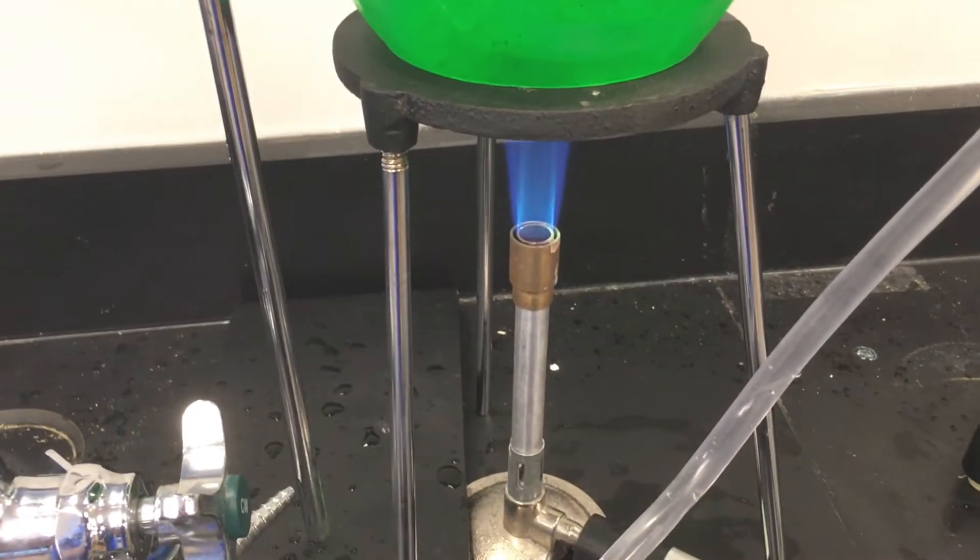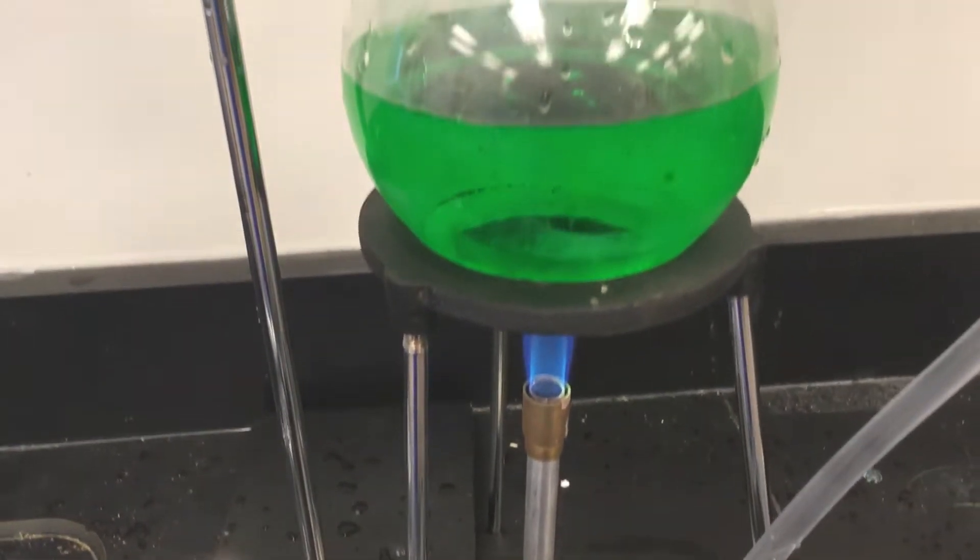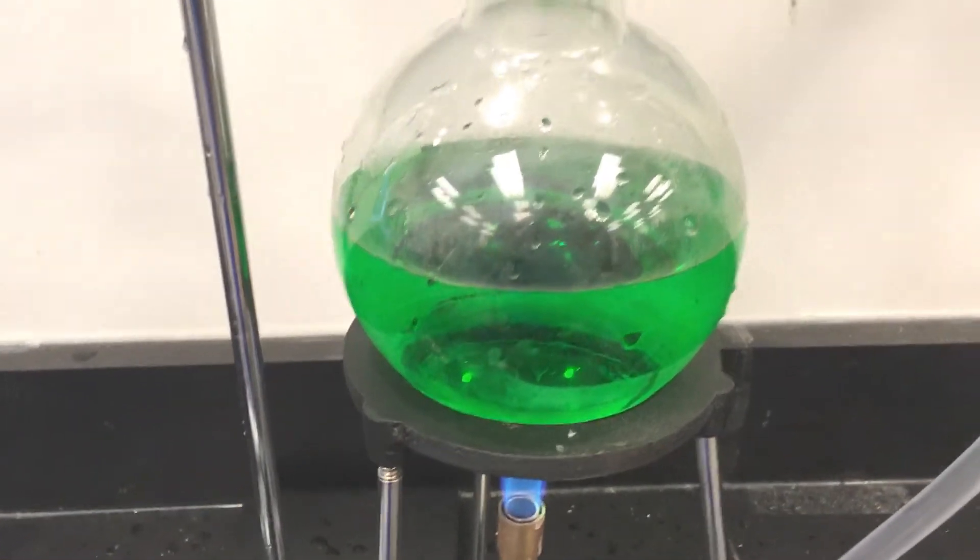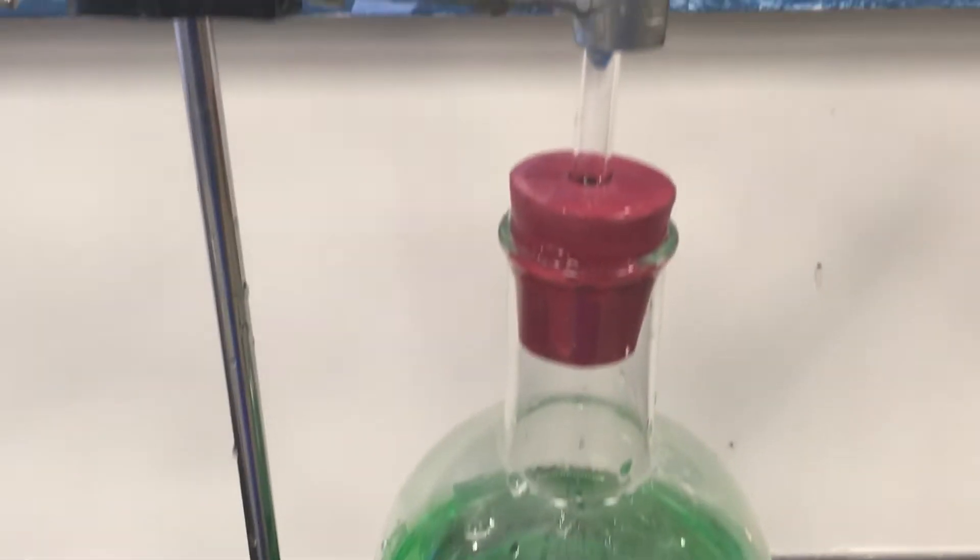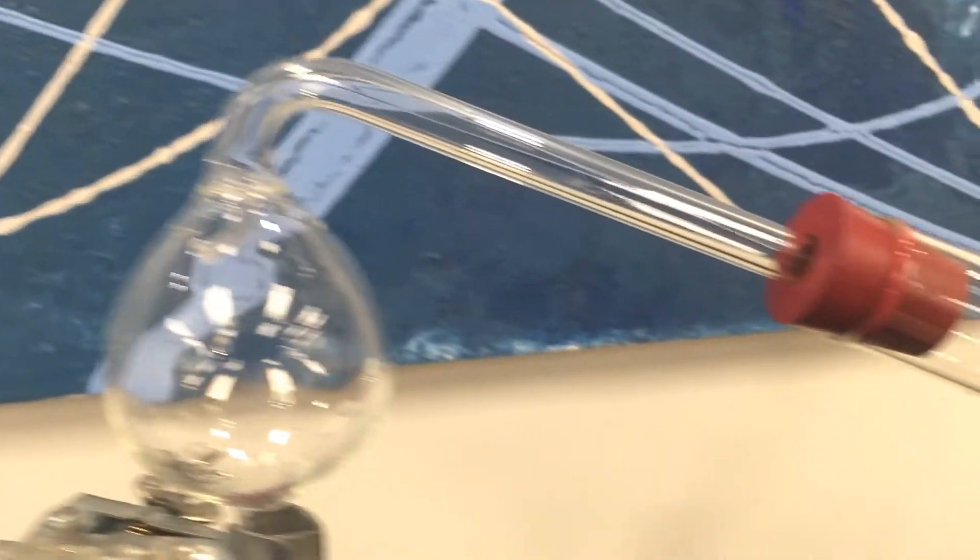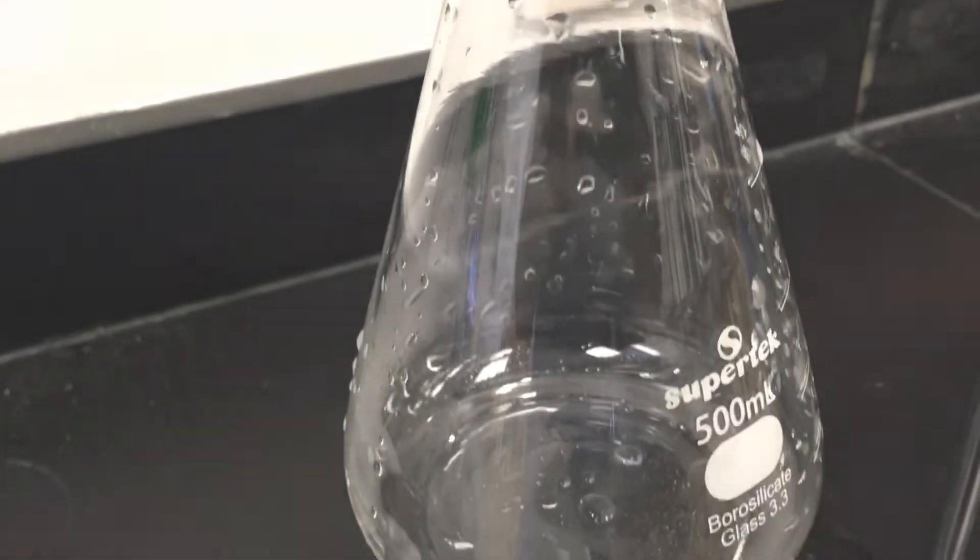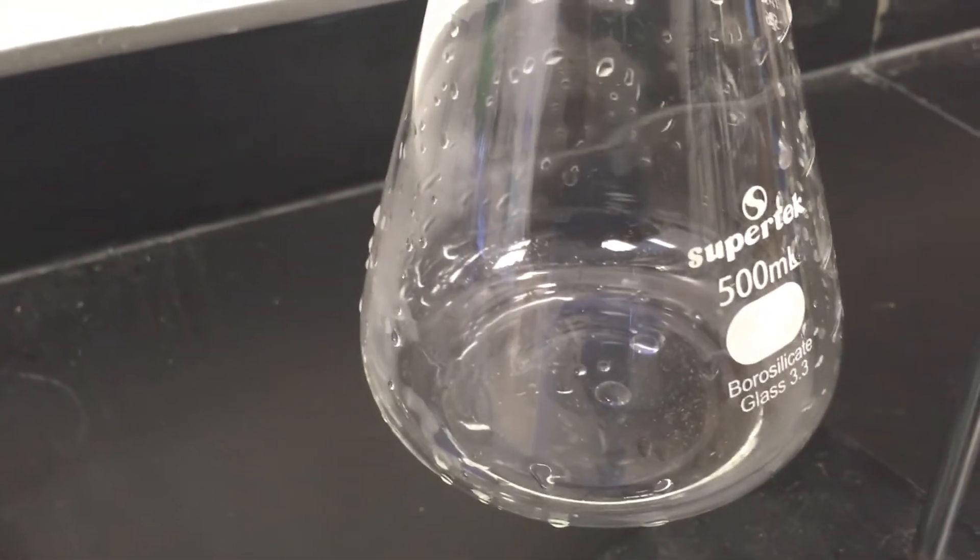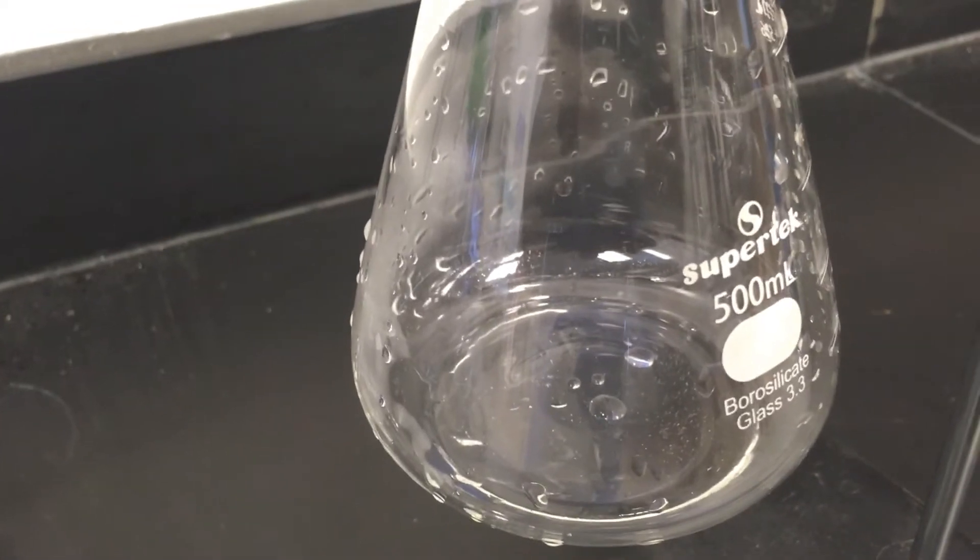All right, here's the process once more. We're going to heat this mixture of food coloring and water. The vapors are going to come up here, they are going to condense running through this condenser and come out here. Now the question is, is it going to be clear? Is it going to be green? Or is it going to be somewhere in between?